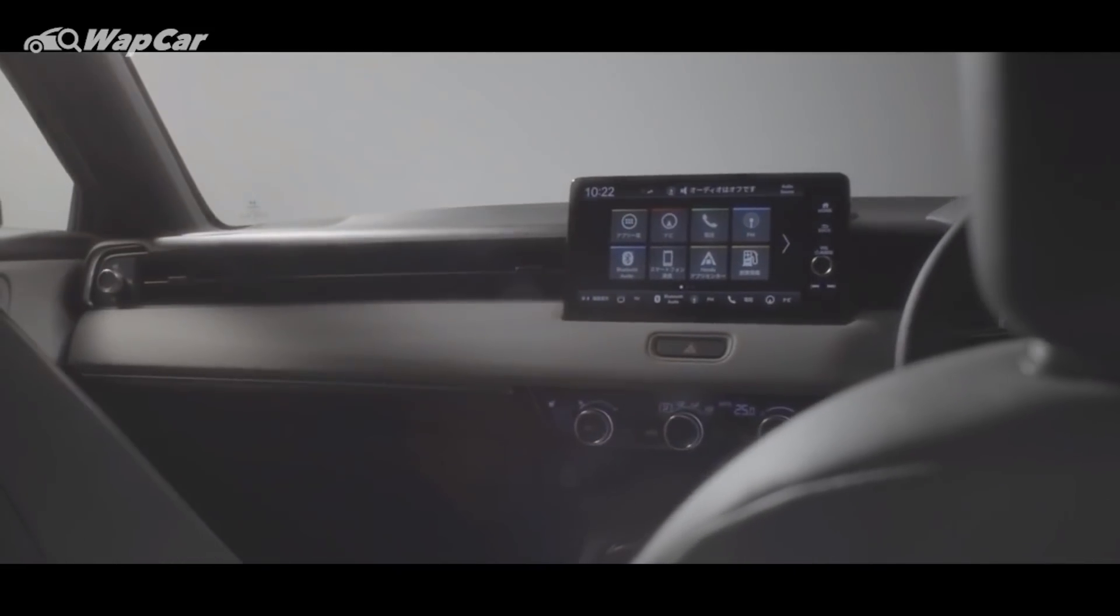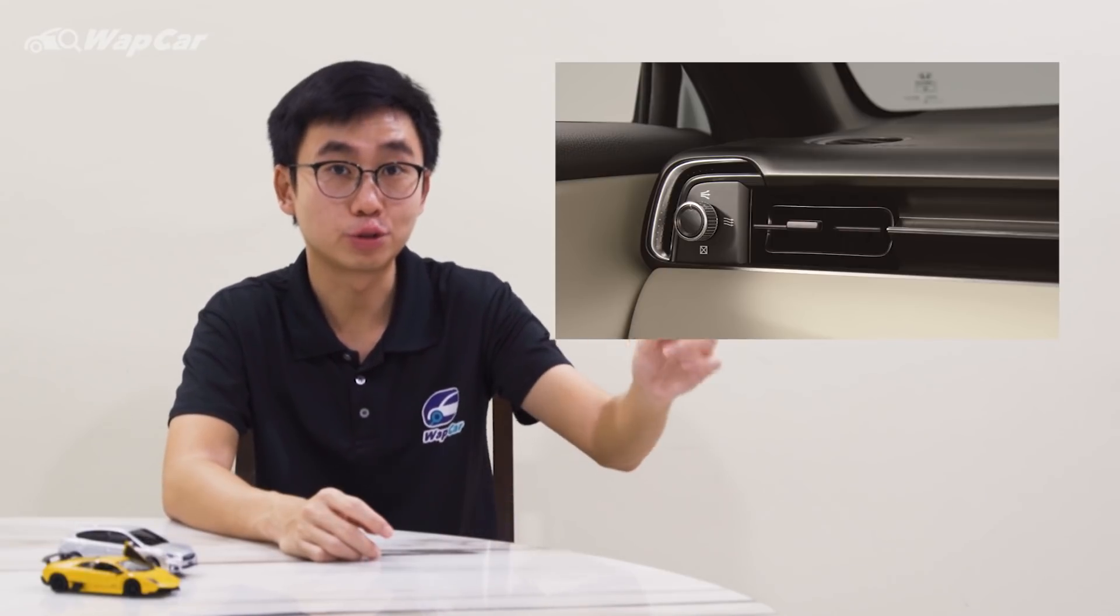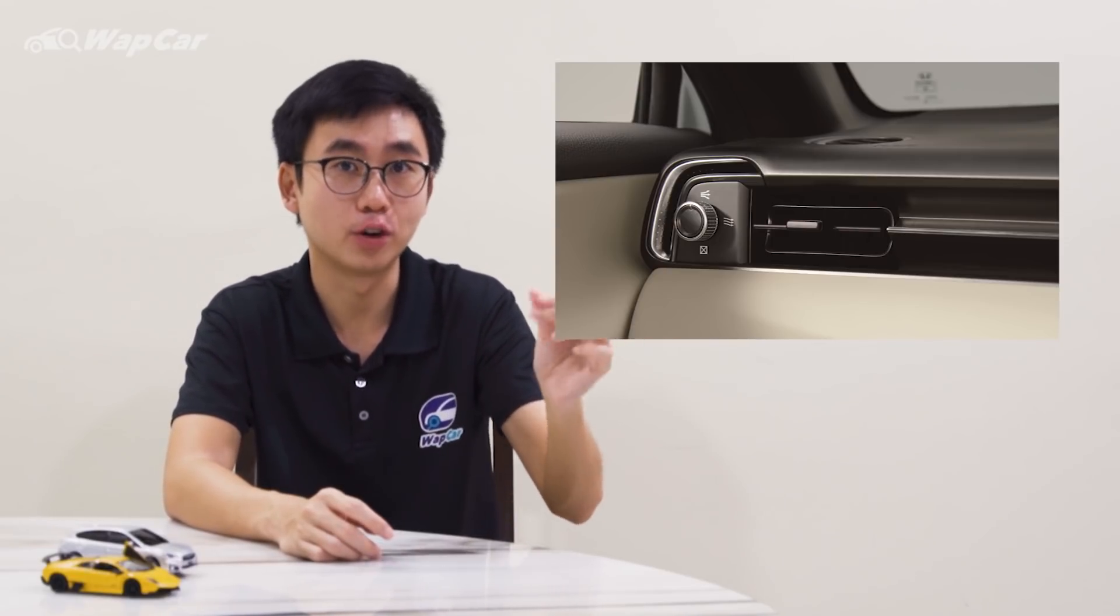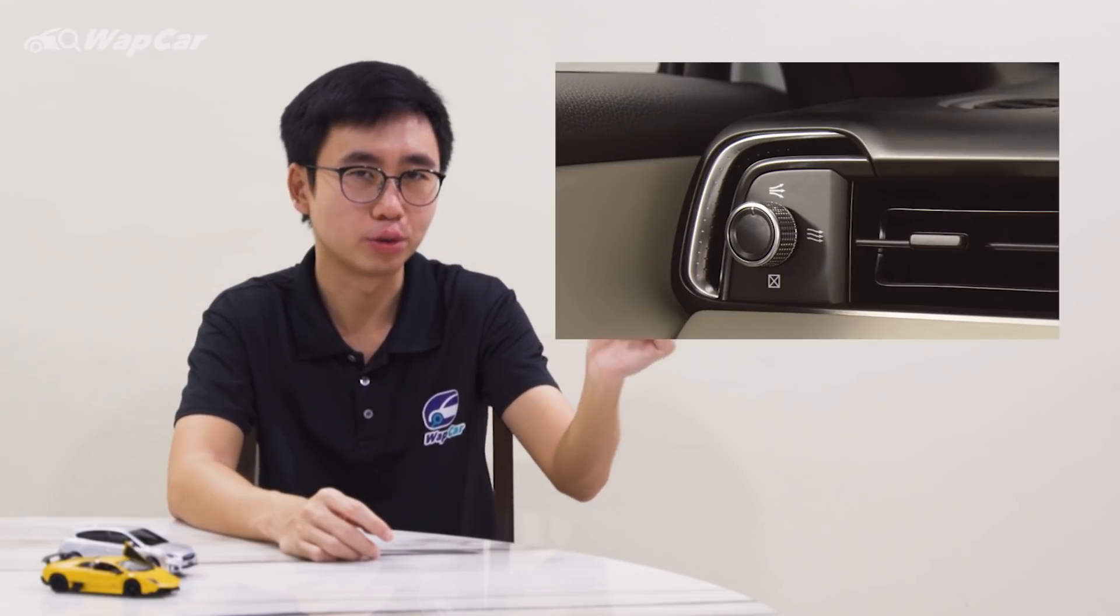But the floating touchscreen infotainment system is à la Honda Accord, and Honda has managed to retain the full-length air vent design that runs across the entire width of the dashboard, but with a nice quirky little touch. Because on the control knob for the airflow, they've designed like a little rotary knob for you to twist and adjust the airflow, and I'm loving it. It looks like a very nice retro touch.